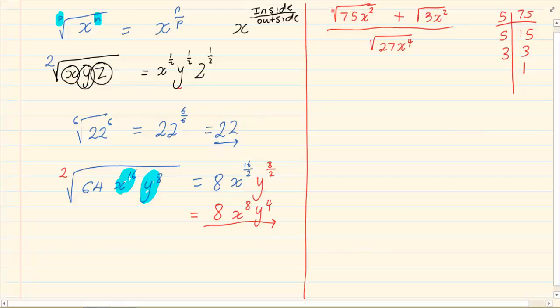So 75, because it's a square outside that means I must group in twos. So my answer would be 5√3. But what happens to the x squared? It becomes x inside over outside based on this rule. Plus, I can't change root of 3, x inside over outside, all over 27.